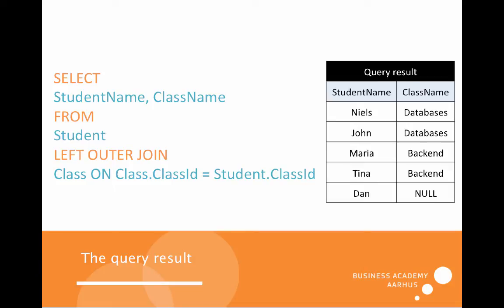That gives us this query result. As we can see, Dan has no class name — that means we get NULL. And NULL is not nothing in the sense of zero or an empty string; it is actually the absence of any value. So we get a picture where all the students are listed, whether or not they are in a class.